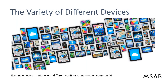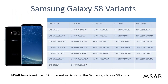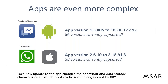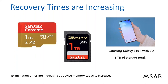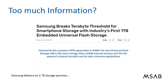Every device is unique and needs to be individually reverse engineered. There are huge variations even among the same models — MSAB has identified 37 different variants of the Samsung Galaxy S8 alone. Every time an app is updated it can change how and where data is stored on a handset and whether it's encrypted or accessible. The world is storing more data than ever, meaning extraction times inevitably increase. Linear extraction of one device at a time won't be possible in the future — Samsung already delivered on a one-terabyte flash storage promise.